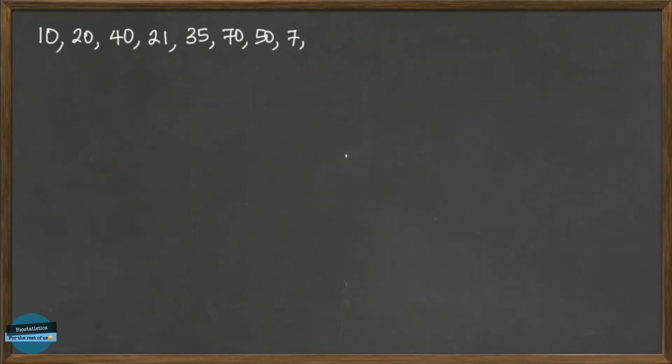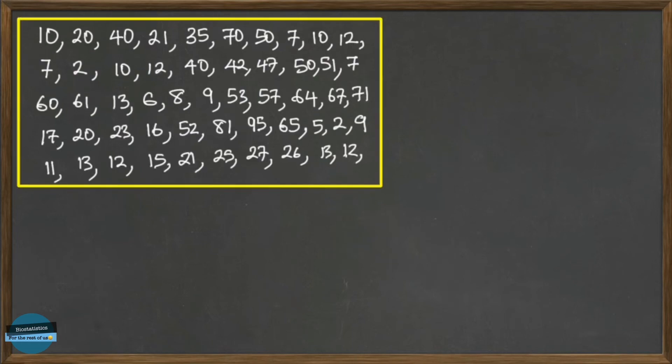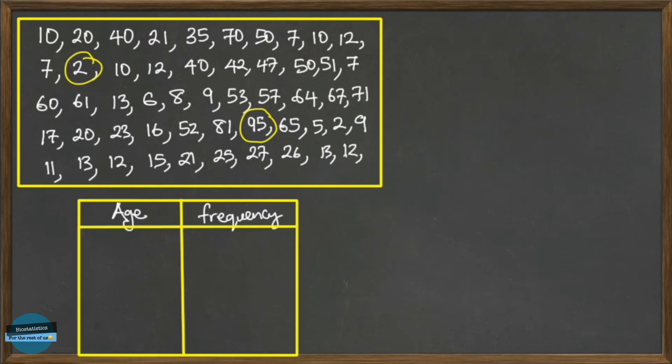So let's consider the same data set. This is the same data set. Our minimum value here is 2, our maximum value is 95. Now we can just easily present this data in a table that looks like this, where we group the ages into classes to make it more easy to understand.